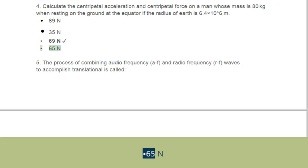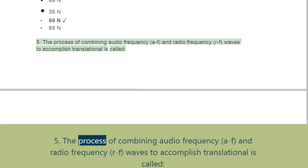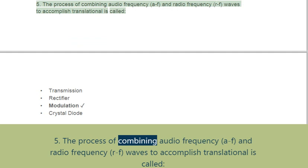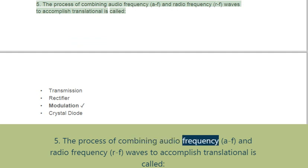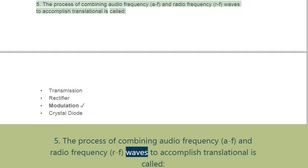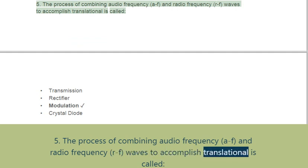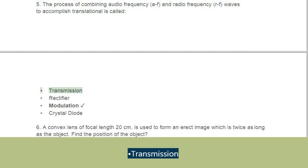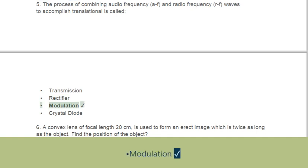Question 5: The process of combining audio frequency and radio frequency waves to accomplish transmission is called. Options: A. Transmission, B. Rectifier, C. Modulation, D. Crystal diode.